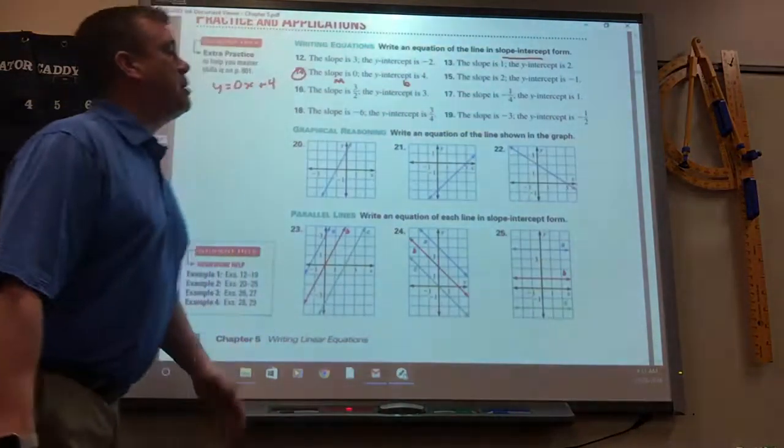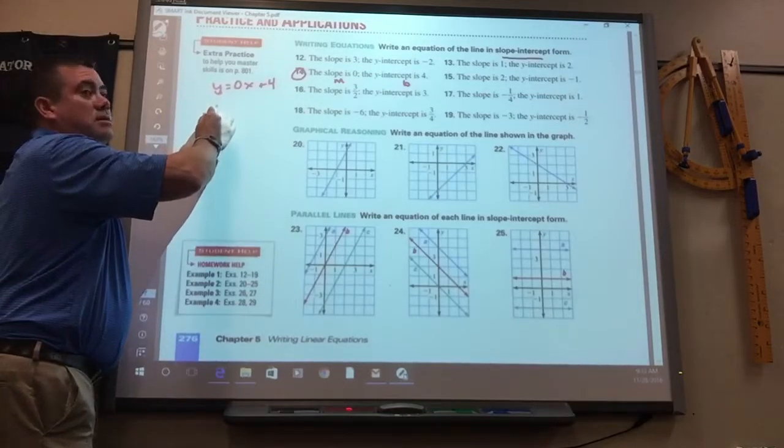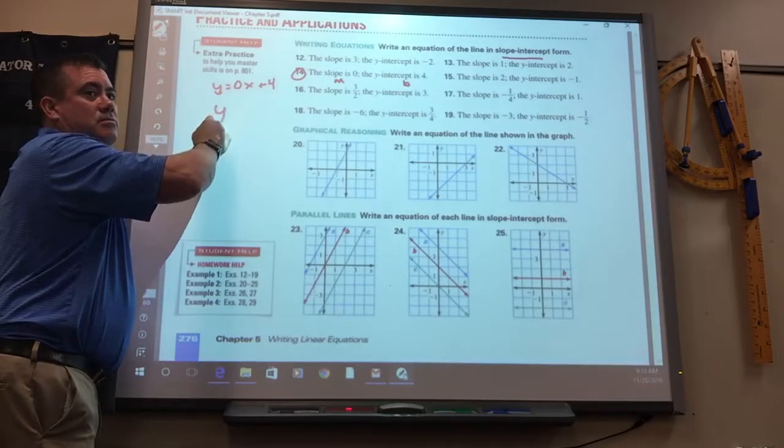So you can leave it like that. But if you did simplify it, what would it just be? Y equals 4 because 0X is nothing.